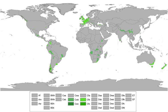In most areas with an oceanic climate, precipitation comes in the form of rain for the majority of the year. However, some areas with this climate see some snowfall annually during winter. Most oceanic climate zones, or at least a part of them, experience at least one snowfall per year. In the poleward locations of the oceanic climate zone, snowfall is more frequent and commonplace.